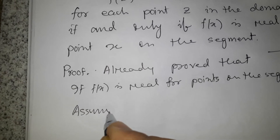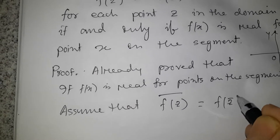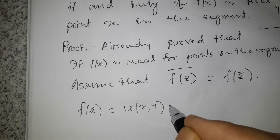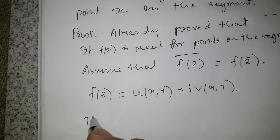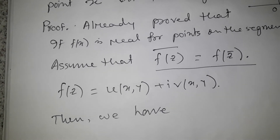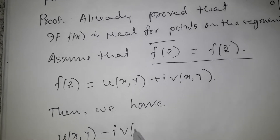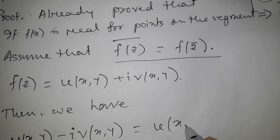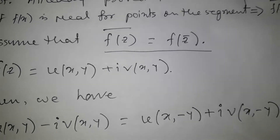Now we assume that f(z̄) = conj(f(z)). Writing f(z) = u(x, y) + i·v(x, y), the conjugate of f(z) gives u(x, y) − i·v(x, y), and f of z-conjugate equals u(x, −y) + i·v(x, −y).